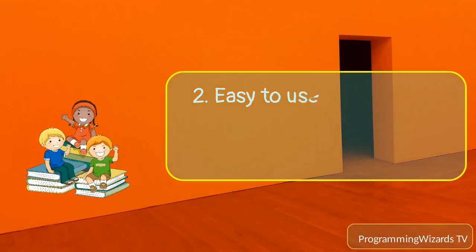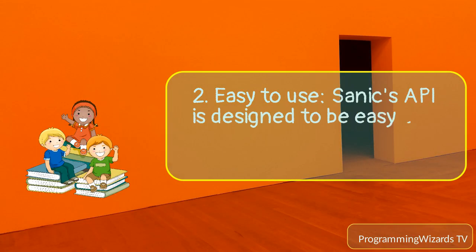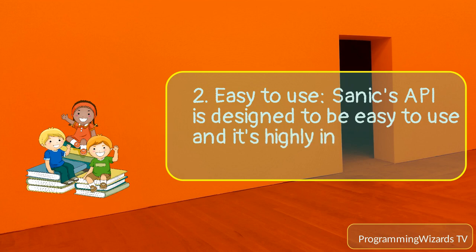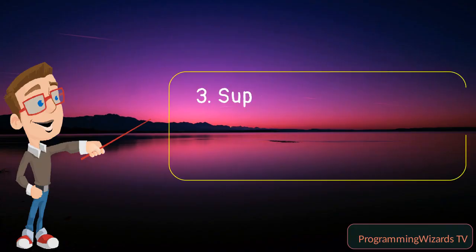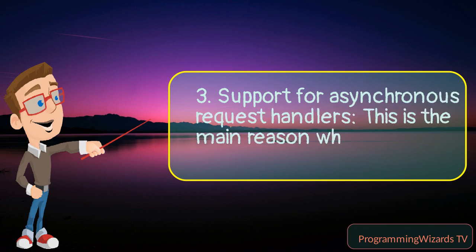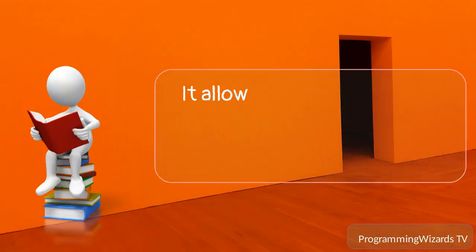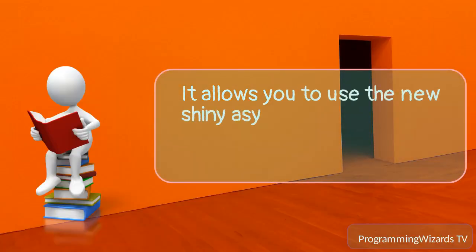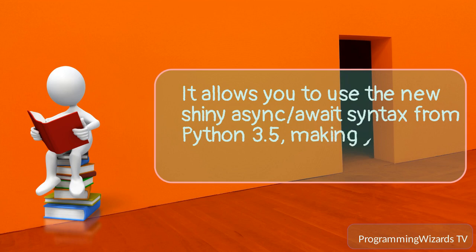2. Easy to use — Sanic's API is designed to be easy to use and is highly influenced by Flask. 3. Support for asynchronous request handlers — this is the main reason why Sanic is so fast. It allows you to use the async/await syntax from Python 3.5, making your code non-blocking and speedy.